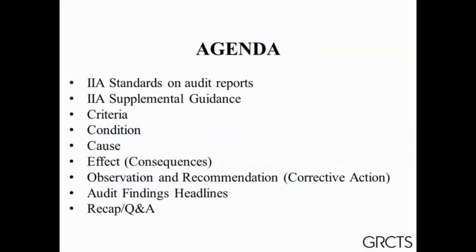This is our agenda for today. We're going to look at the IIA — the Institute of Internal Auditor — Standards on Audit Reports. We're also going to look at the IIA Supplemental Guidance, specifically Audit Reports: Communicating Assurance Engagement Results, which is where most of the information for this webinar will come from. Then we're going to look in detail at the elements of the write-up: criteria, condition, cause, effects or consequences, observation, and recommendation or corrective action. Then we're going to look at some audit finding headlines, because the headline captures the reader's attention and how well you put that together can impact whether or not they even read it. Then we'll do a recap and Q&A.